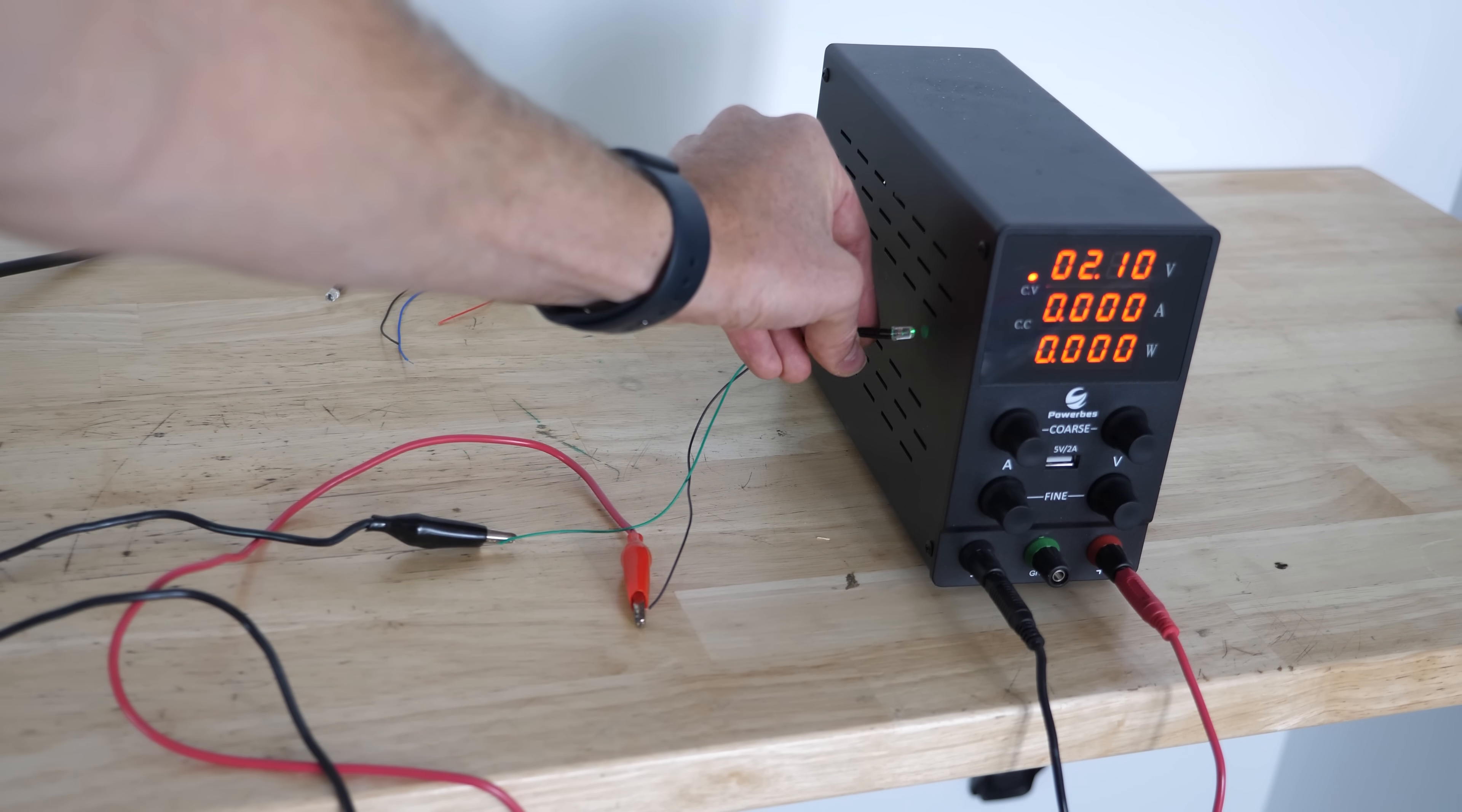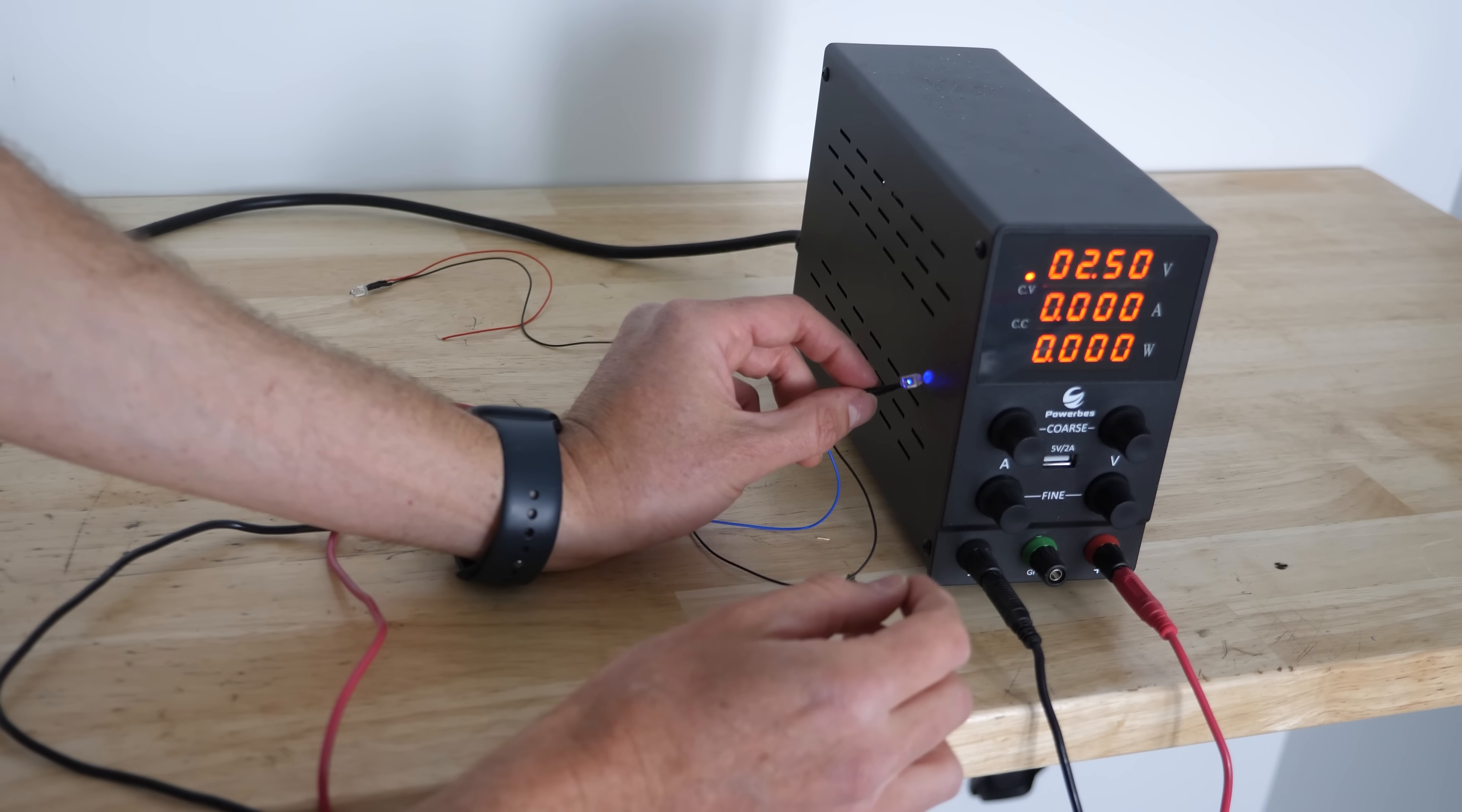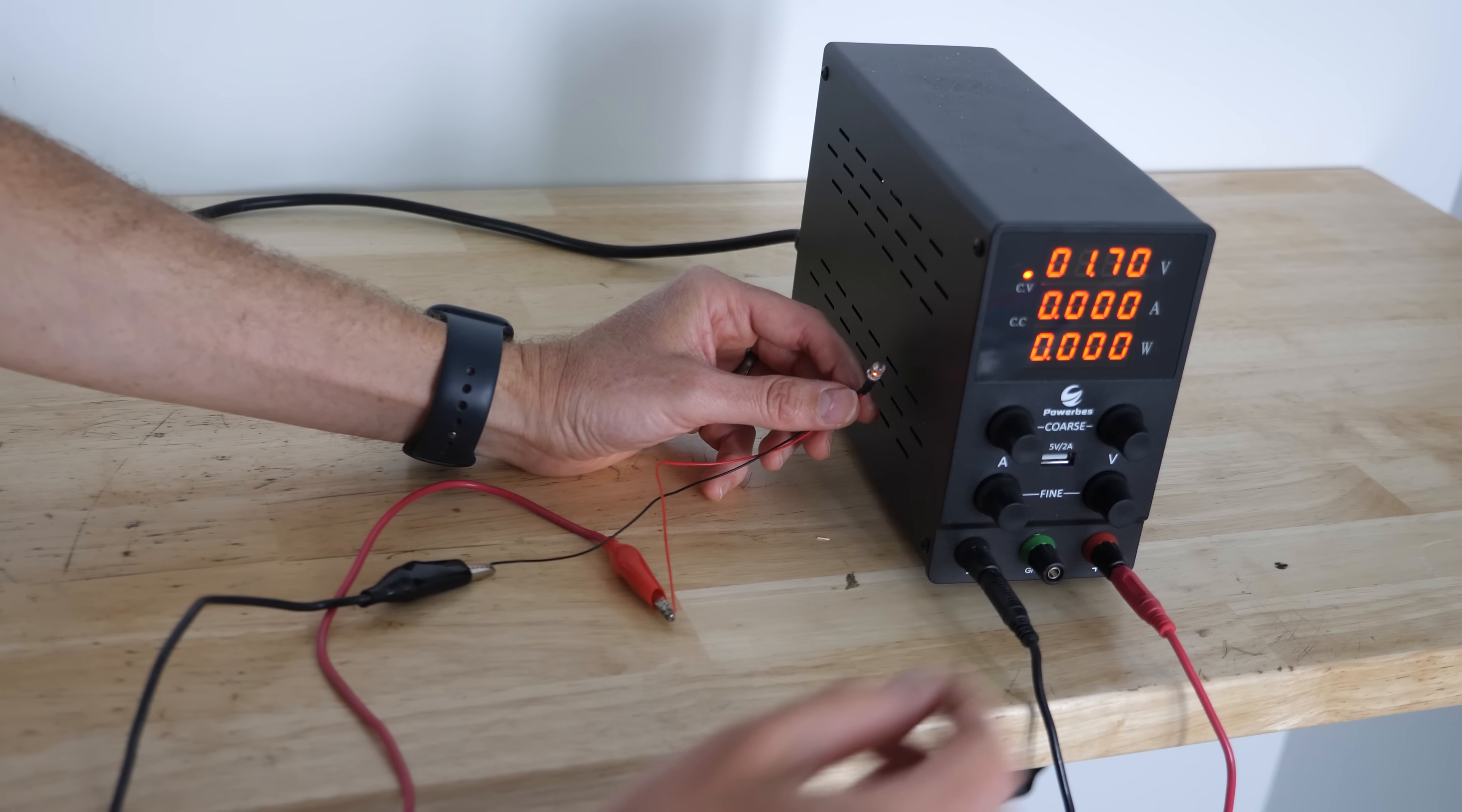Okay for the green light right here we get around 2.1 volts. So for the blue light I'm going to go with around 2.5 volts. And now for the red light we get around 1.7 volts.